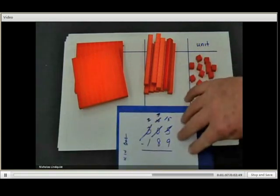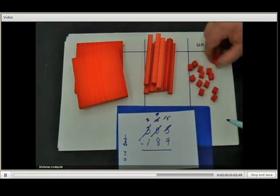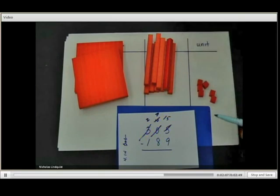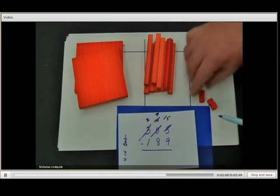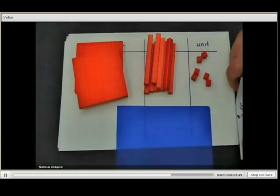Okay, now we're ready to start taking nine away from 15. So we're going to take three, six, nine away, which leaves two, four, six units.